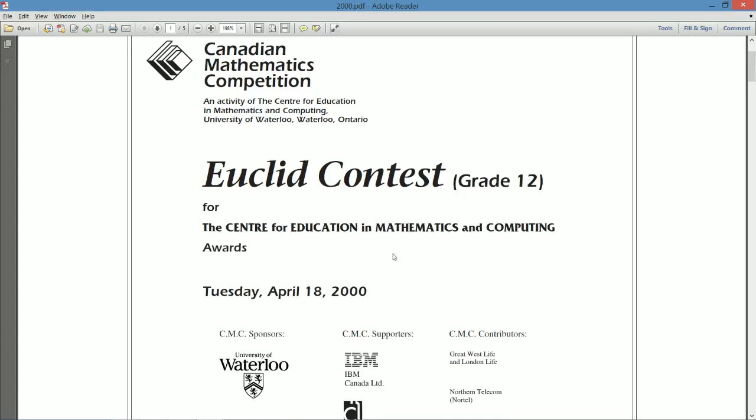The Euclid contest is aimed at the grade 12 level in contrast to say the Descartes paper, which was just aimed at the senior level. Younger grades can absolutely write it. And if you are looking for scholarships, it's a good idea to write the Euclid. And if you are thinking forward and ahead in terms of your university future, it might be a good idea to write the Euclid in grade 9 and grade 10 just so you know what you're up against.